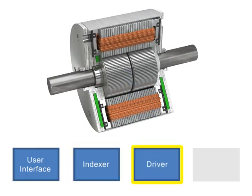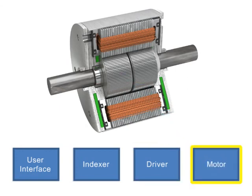The driver then takes the data from the indexer and provides current pulses to the motor. The number of steps the motor turns is equal to the number of pulses transmitted to the driver. The stepper motor is a brushless electric motor that converts pulses into mechanical shaft rotation.